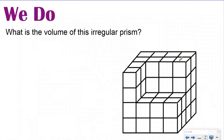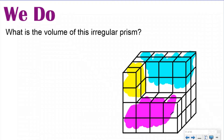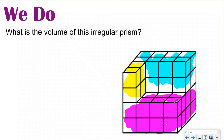For our 'we do' problem — if you don't have your notes, check the description for a link to the Google Doc you can print or copy. The question is: what is the volume of this irregular prism? I would split it into three separate rectangular prisms: a small four-piece section, a bigger prism behind it, and a separate prism underneath holding everything up. There's no right or wrong way to split them, as long as you don't count cubes twice, because accidentally double-counting gives you the wrong answer.